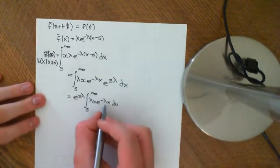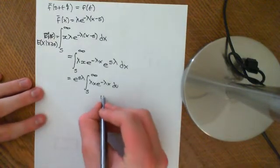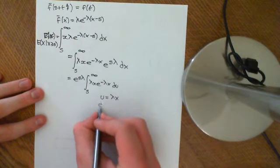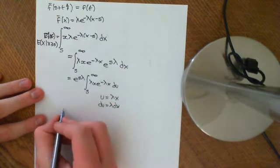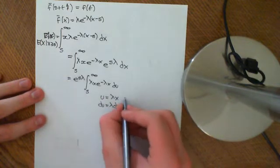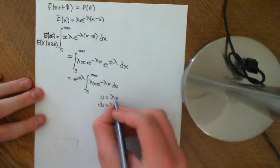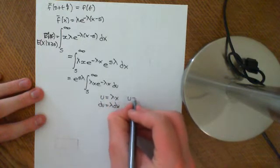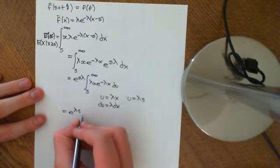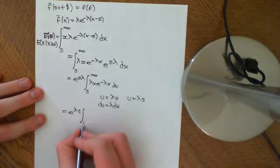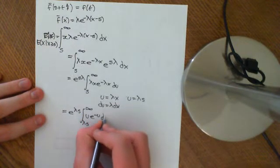What we can then do is make a u-substitution, setting u equal to lambda times x, so that du equals lambda dx. Plugging this in, when x equals infinity the limit remains the same, and when x equals s, u becomes lambda s. So we get e to the lambda s times the integral from lambda s to infinity of u e to the negative u du.